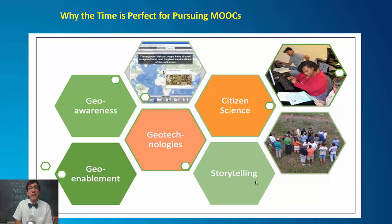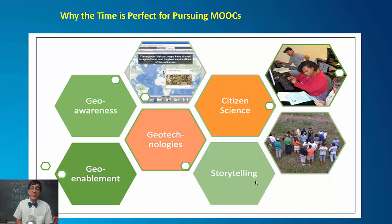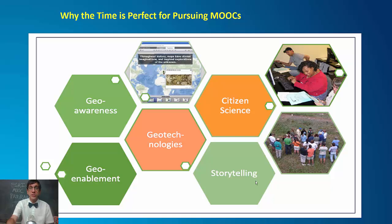Secondly, people are becoming enabled to use at least some of the geotechnologies that were, up until recently, only used by our community. Geotechnologies are also rapidly advancing into the cloud and are becoming more powerful and easier to use at the same time. Citizen science data can be gathered and analyzed in real time — and we can map it. Finally, people are seeing anew the power that multimedia, shareable maps have to tell stories from local to global issues.